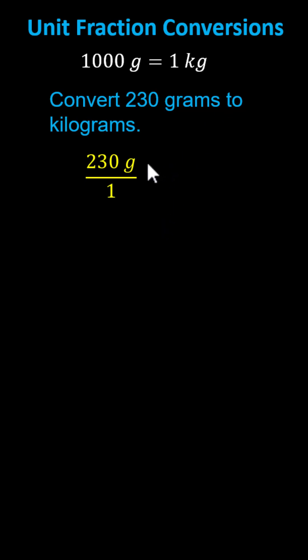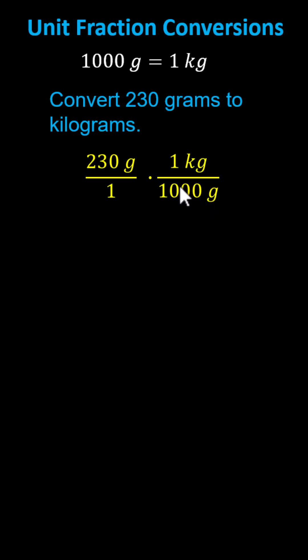Because we have grams in the numerator, for the unit fraction we need grams in the denominator, and therefore we multiply by the unit fraction of one kilogram divided by 1,000 grams — or the ratio of one kilogram to 1,000 grams. Because these weights are equal, notice this quotient is one, which is why we call this a unit fraction.